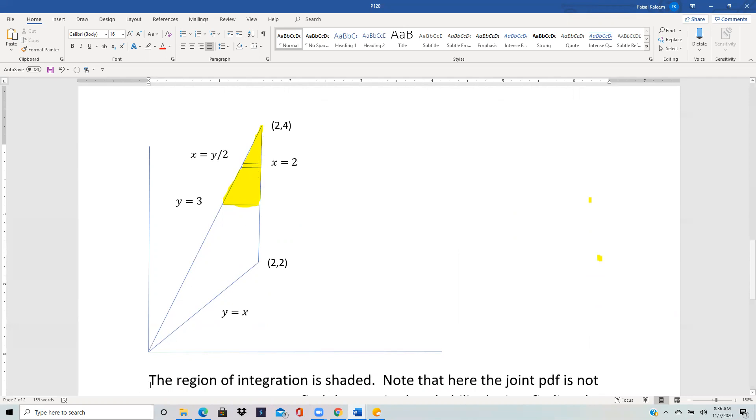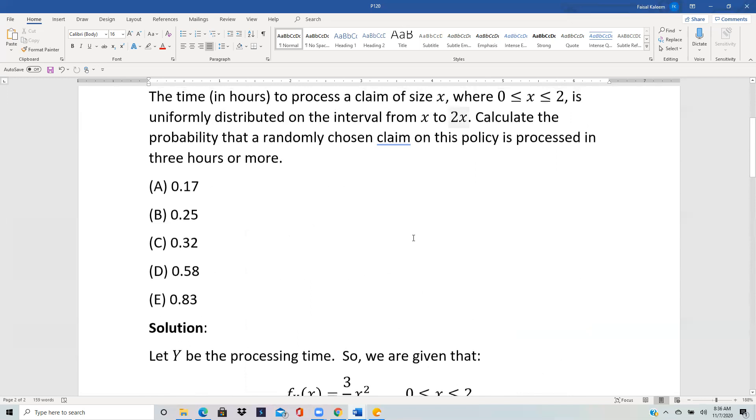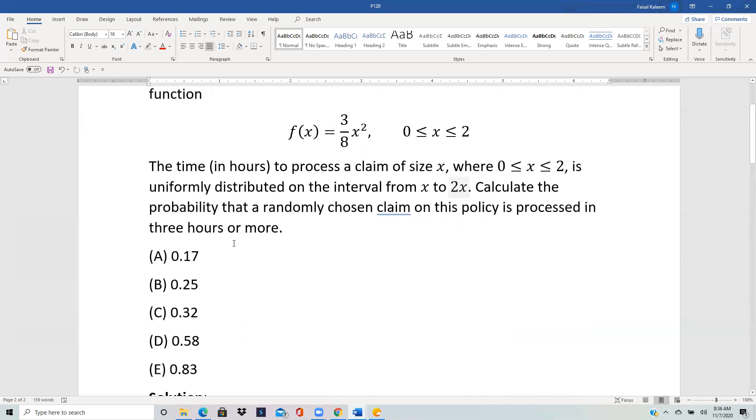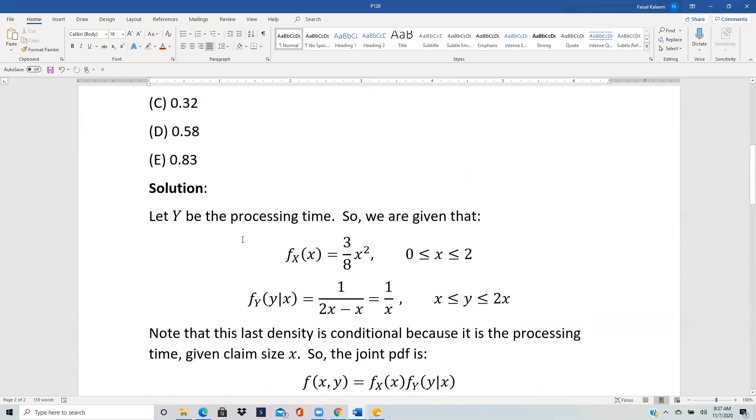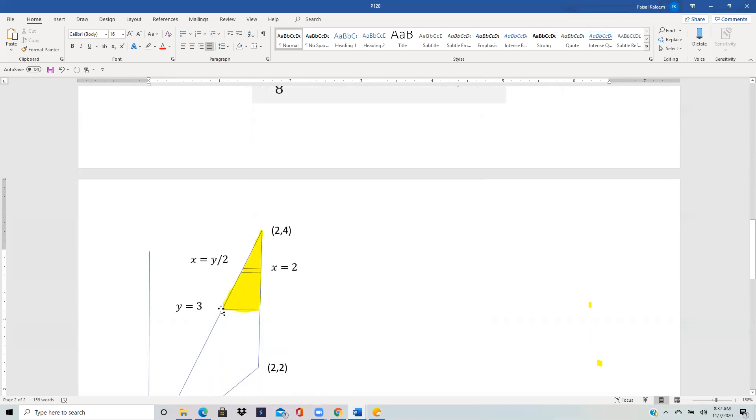But we are interested in probability of time being more than three hours, more than or equal to three hours. So we are interested in the region above the line y equals three, so the yellow region. So that will be our region of integration.